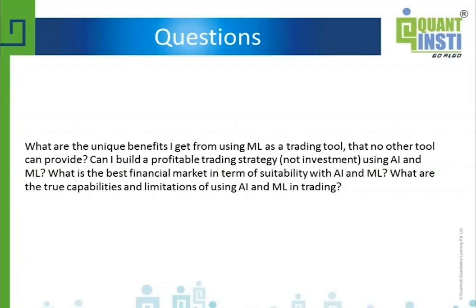So if you have so many input parameters and input features and you don't have a particular strong conviction about what should work and what shouldn't, then machine learning is the only way you can hope to extract alpha from all these features. Some of these features on a standalone basis may be very weak and can only work if combined in a suitable manner with other features, which a human trader cannot really possibly do.